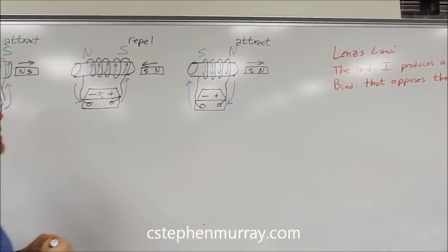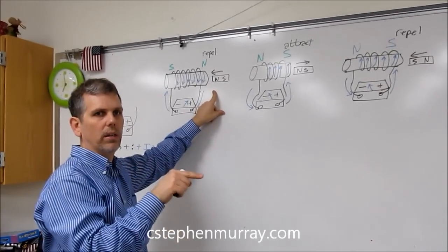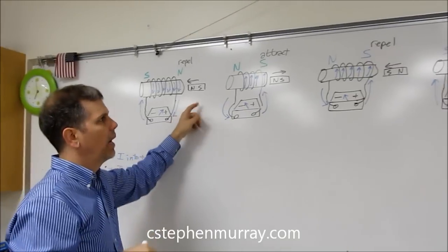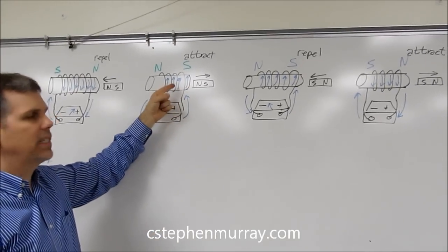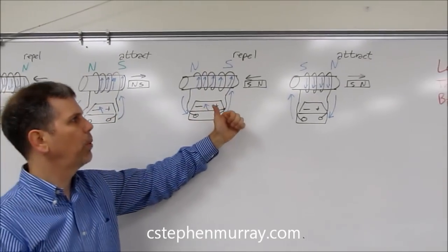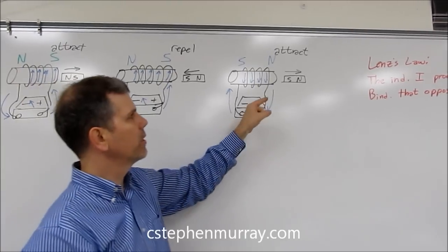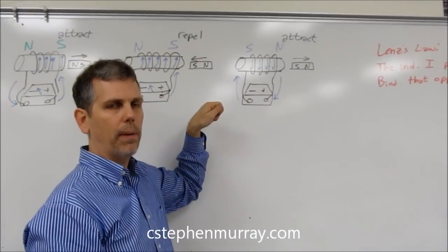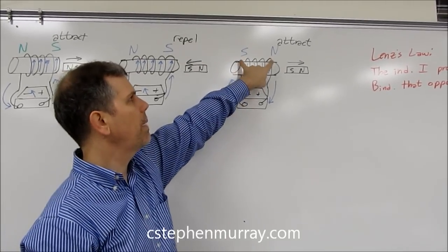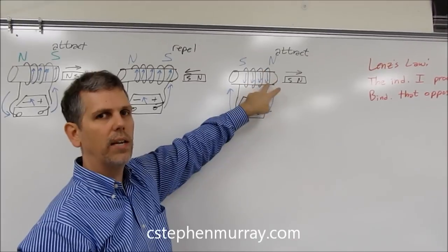In each of these cases, we try to put a north pole in, it opposes it with making a north pole towards the north pole that's trying to enter. I try to pull out the north pole, it makes a south pole trying to keep it back in. I put a south pole in, it tries to make a south pole to repel it. I pull a south out, it tries to make a north pole to pull it back in. In each of these four cases, the induced magnetic field in the solenoid is opposing the change of magnetism.